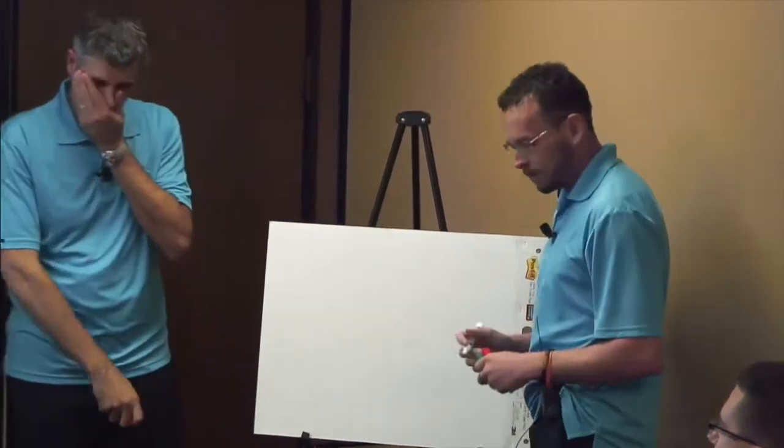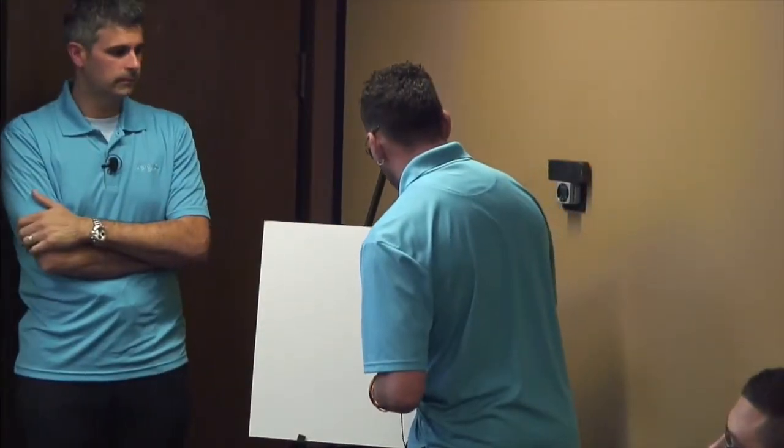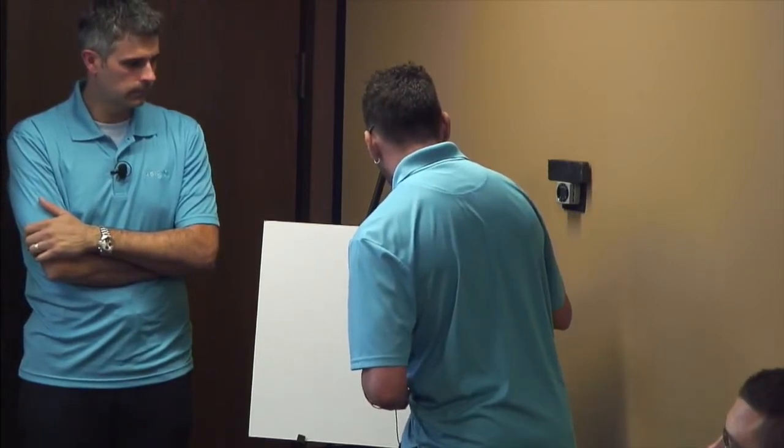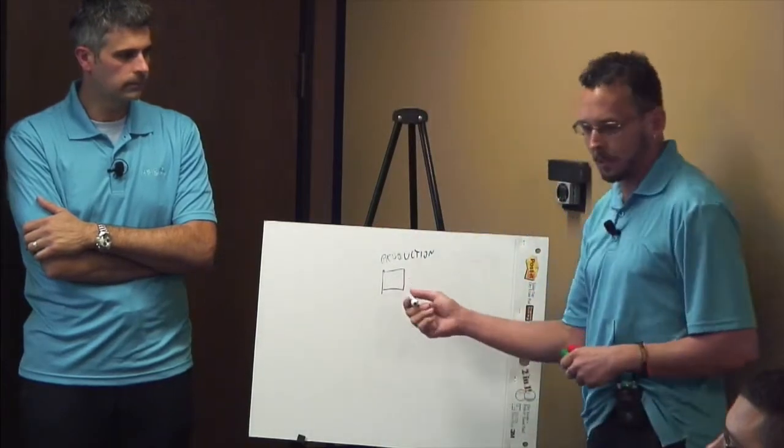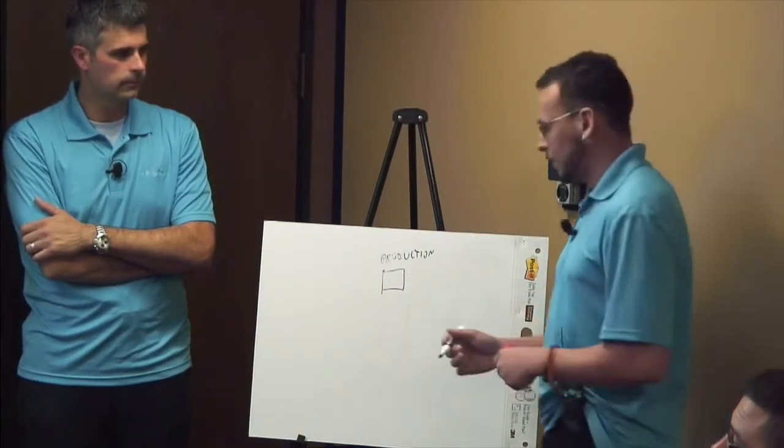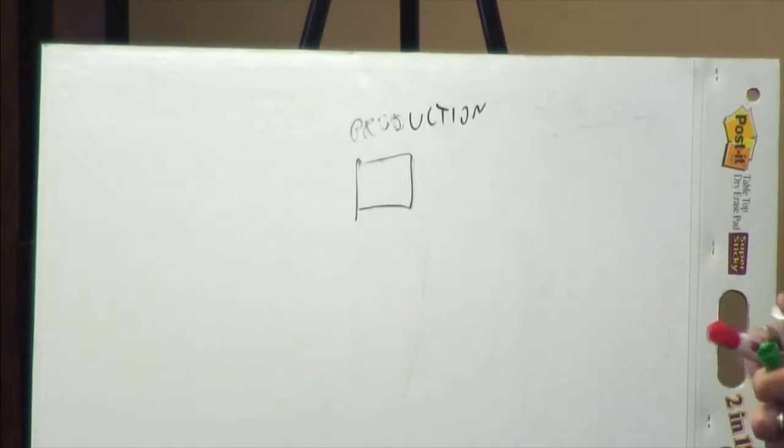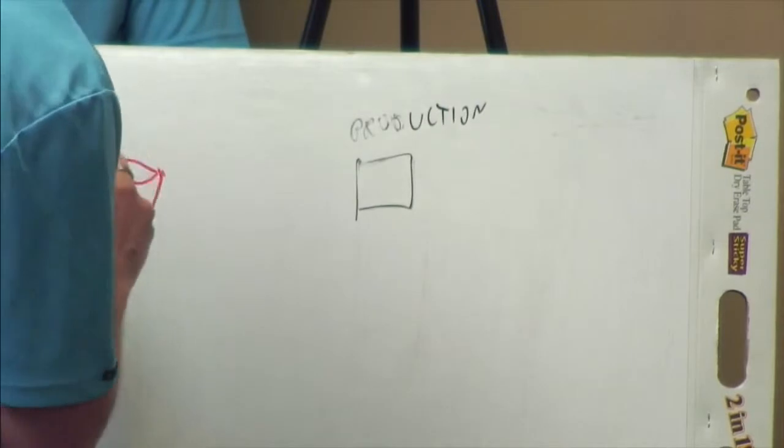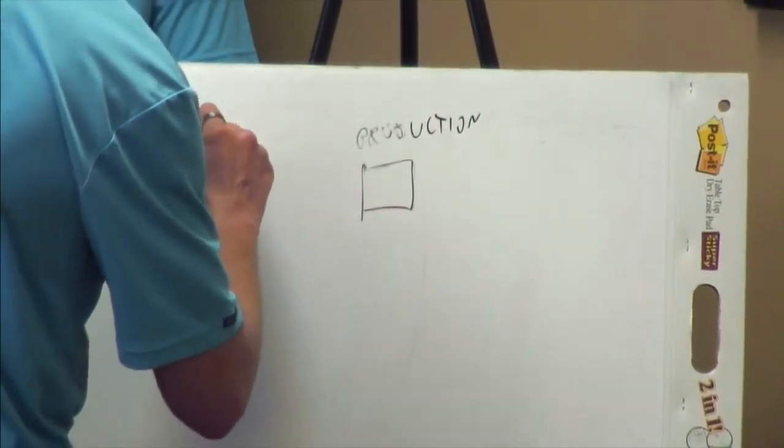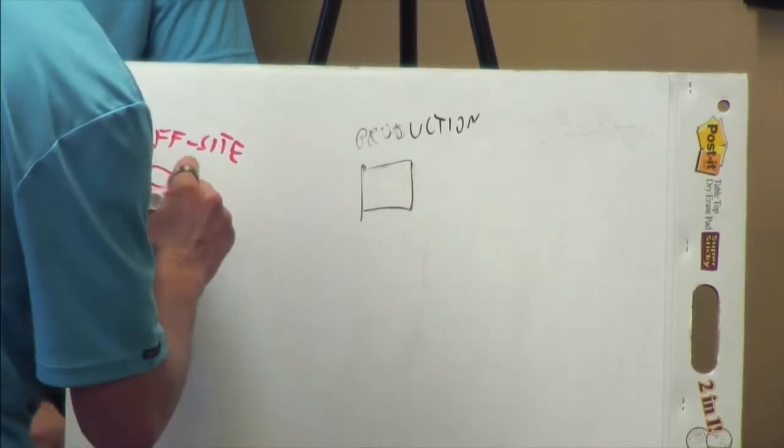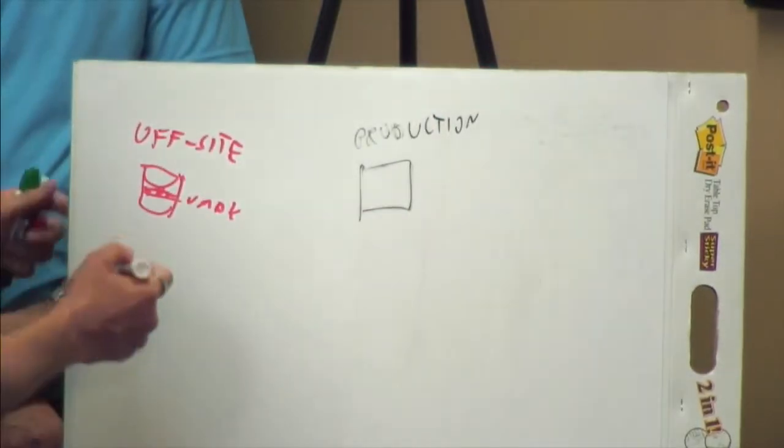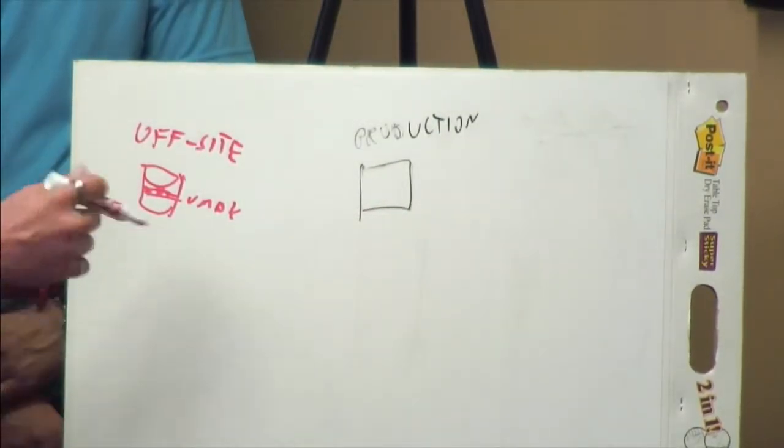I'm going to use the whiteboard. So we have a production system. First let's explain how most companies do the file level restore. What they do is, you have a storage off-site where you have your VMDK virtual machine stored. Of course, it's encrypted, compressed, deduplicated.